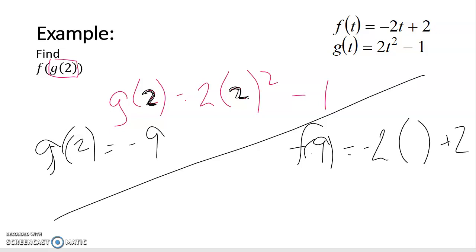So we have negative 2 and I just need to put that negative 9 everywhere there was a variable. So now I just need to do the math. Negative 2 times negative 9 is positive 18, positive 18 plus 2 is 20.